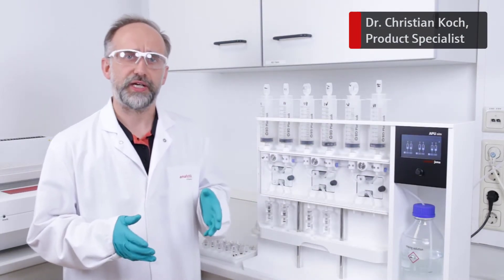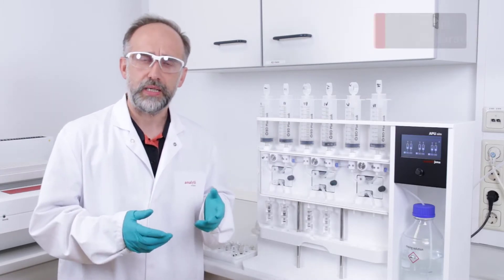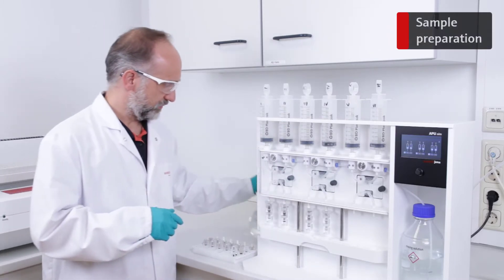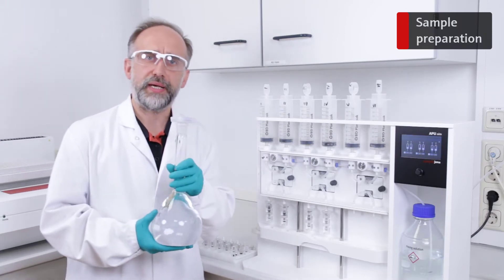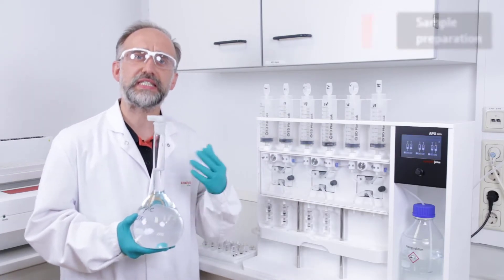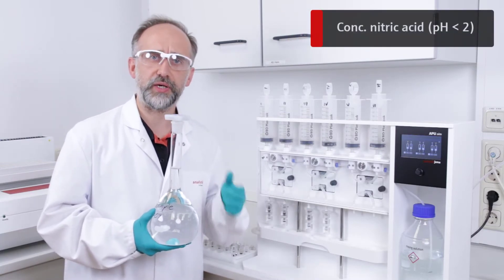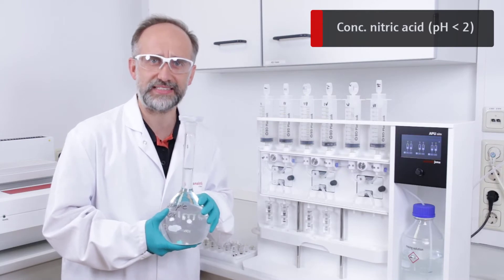Before we start the absorption, it's really mandatory to prepare the sample. The sample itself needs to be prepared in the following way. First, we have to acidify the sample to reach pH 2. This can be achieved by using concentrated nitric acid.